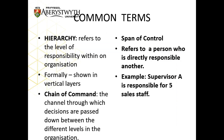The term hierarchy refers to the levels of responsibility within an organization, shown in vertical layers. The chain of command is the channel through which decisions are passed down between different levels. The span of control refers to how many people a person is directly responsible for. A narrow span — say, a supervisor responsible for five sales staff — may encourage more communication and participation. Wide spans of control with fifteen or twenty people can start to create communication issues.